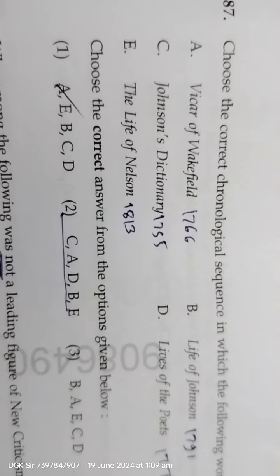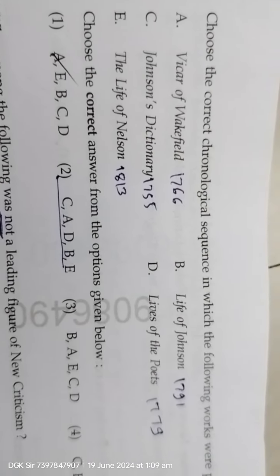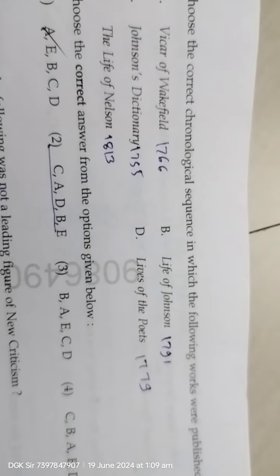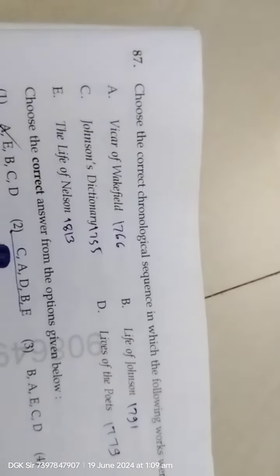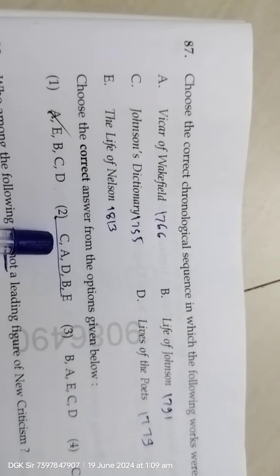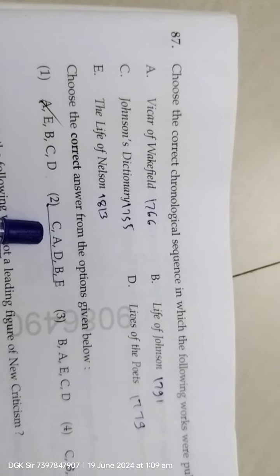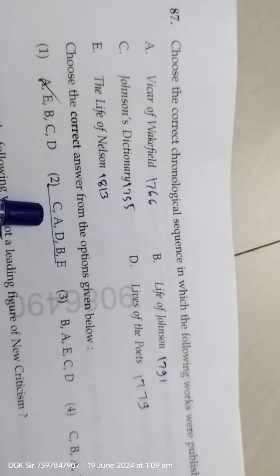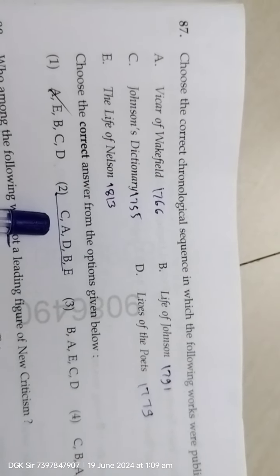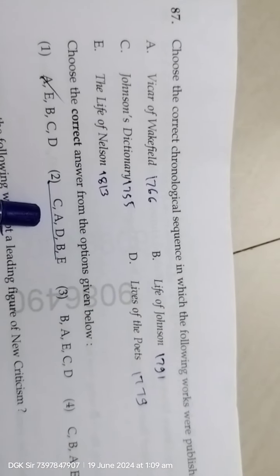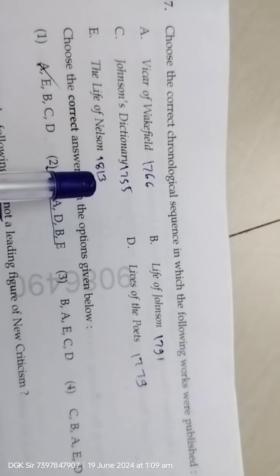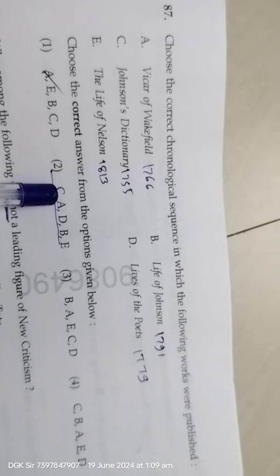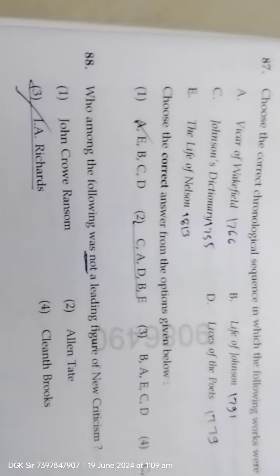Next, question 87: choose the correct chronological sequence in which the following works were published. Answer is second. Because: Vicar of Wakefield — 1766; Life of Johnson — 1791; Johnson's Dictionary — 1755; Lives of Poets — 1779; Life of Nelson — 1813. So the second answer is correct.